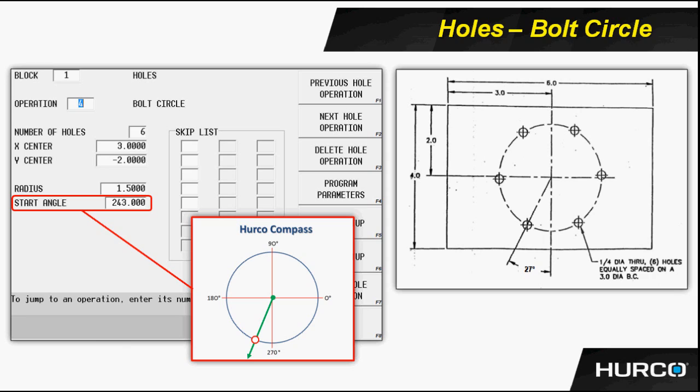If you look at the print that is shown on the right side, the only hole that has any location called out is that hole that is 27 degrees before or less than the 270 degree mark.